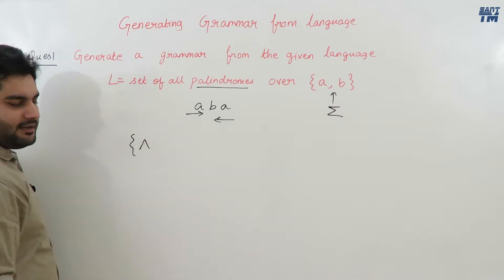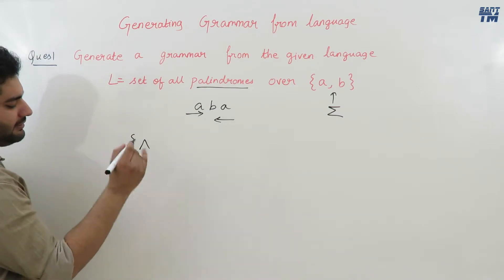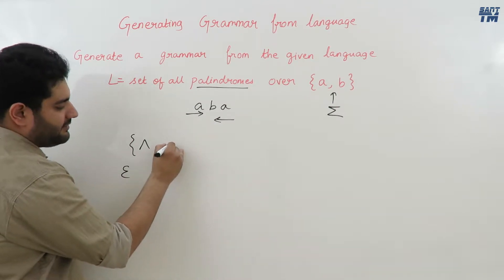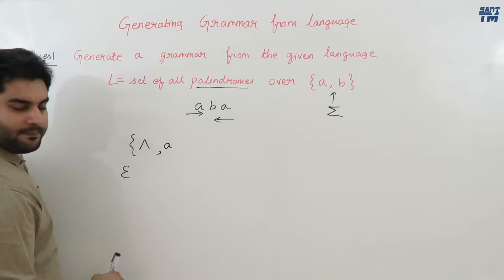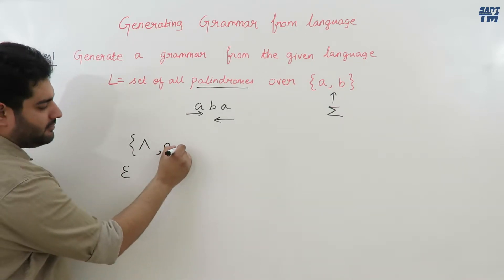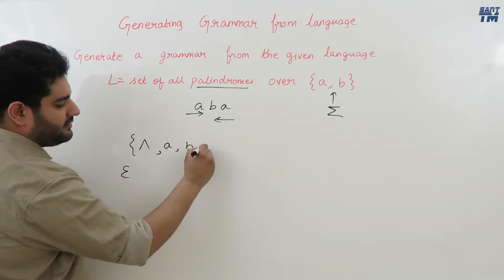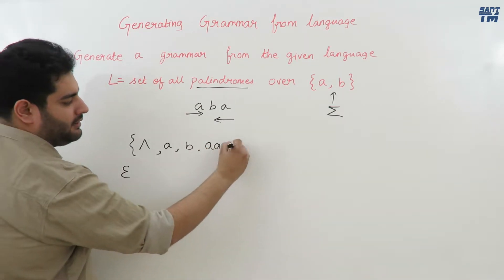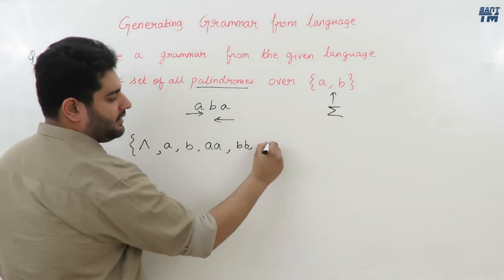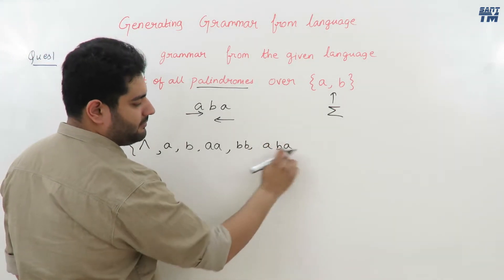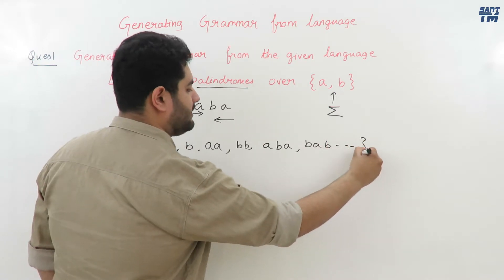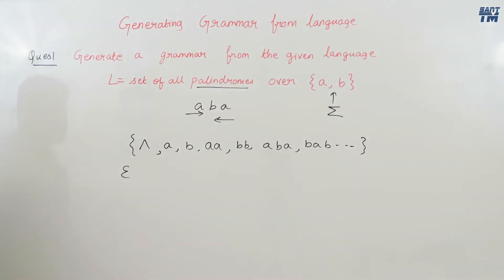The palindromes that can be formed using a and b include: the null string (which is always a palindrome), strings with a single alphabet symbol such as a or b, and longer strings like aa, bb, aba, bab, and so on. This is the set of all palindromes, and this is our language. We have to generate a grammar that will generate this language.